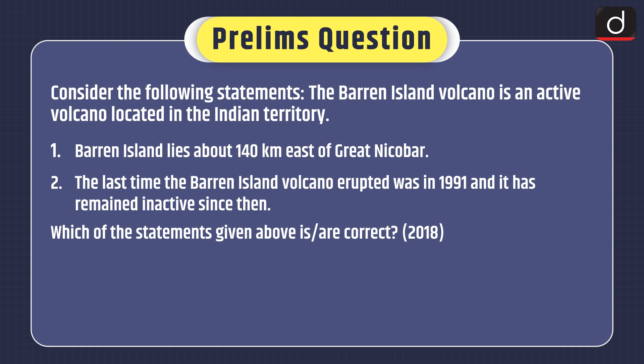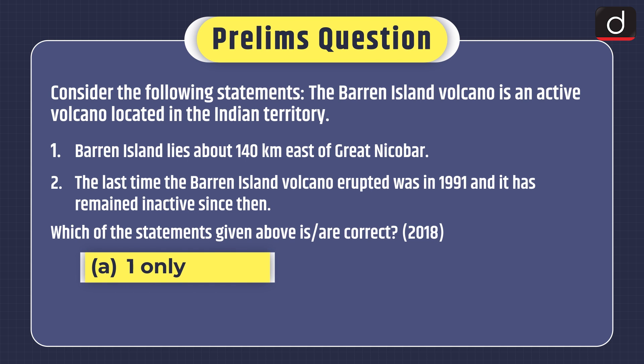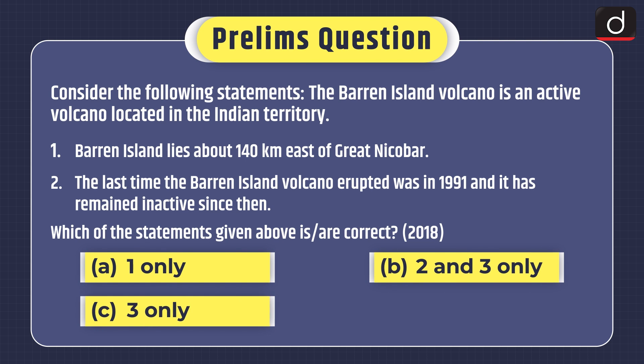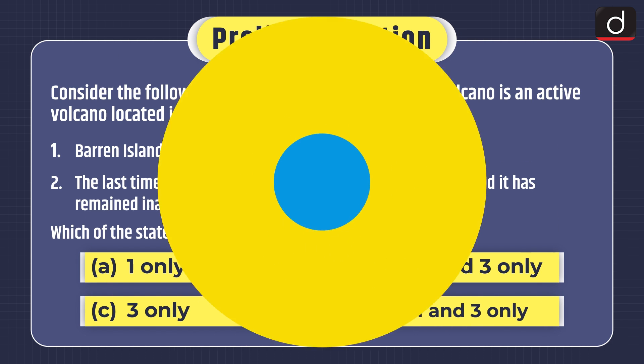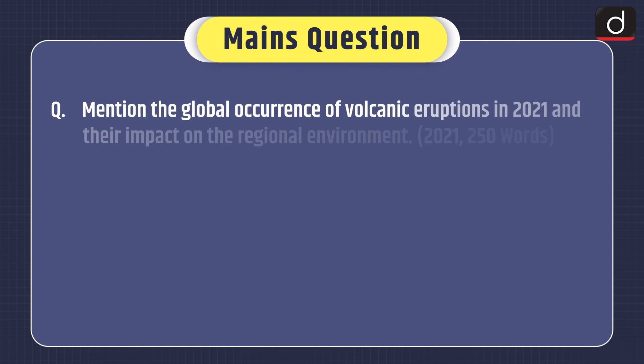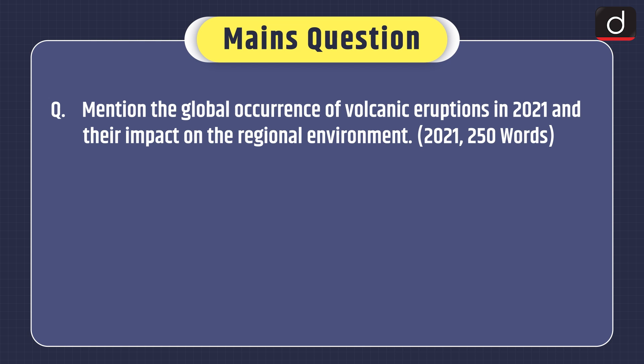Now moving on to practice questions. Prelims question — consider the following statements: The Barren Island volcano is an active volcano located in Indian territory. Statement 1: Barren Island lies about 140 km east of Great Nicobar. Statement 2: The last time the Barren Island volcano erupted was in 1991 and it has remained inactive since then. Which of the statements given above is or are correct — 1 only, 2 and 3 only, 3 only, or 1 and 3 only? Mains question: Mention the global occurrence of volcanic eruptions in 2021 and their impact on the regional environment. That's all for today — stay tuned for the next episode.